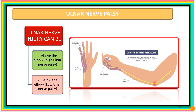In this slide we'll categorize the types of ulnar injuries. Ulnar injuries can be above the elbow, classified as high ulnar palsy, or below the elbow, classified as low ulnar palsy.